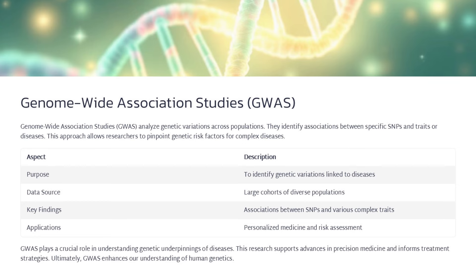Genome-Wide Association Studies (GWAS) are a powerful approach to analyze genetic variations across diverse human populations. The goal of GWAS is to identify associations between specific genetic markers known as SNPs and various traits or diseases. By studying large cohorts of people, GWAS allows researchers to pinpoint genetic risk factors for complex diseases. This research supports advancements in personalized medicine and risk assessment, and plays a crucial role in advancing precision medicine and informing more effective treatment strategies.